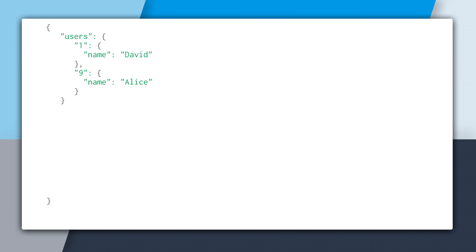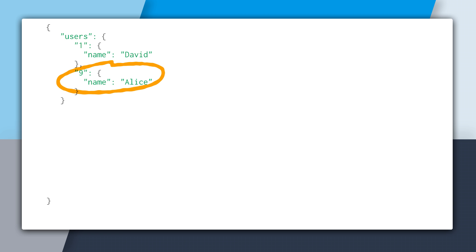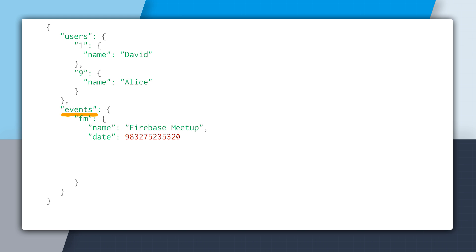Moving from a relational model, you might be tempted to do something like this at first. We'd create a users key, where each child key is a primary key for each user — so one is the primary key for David, and nine is the primary key for Alice. Then we have an events key, where each child key is a primary key for each single event, so FM is the event for the Firebase Meetup.